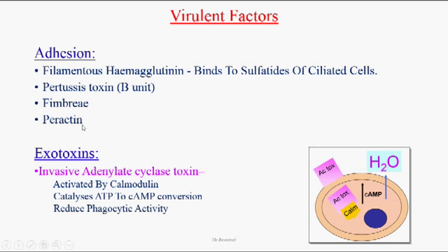These organisms can also have fimbriae and pertactin, but there is no evidence that these are useful for adhesion. These organisms can secrete invasive adenylate cyclase exotoxin, which is activated by calmodulin present on human cells. This adenylate cyclase toxin catalyzes ATP to cyclic AMP. When cellular cyclic AMP is increased, water molecules leak out from the cells, ultimately leading to cell death.